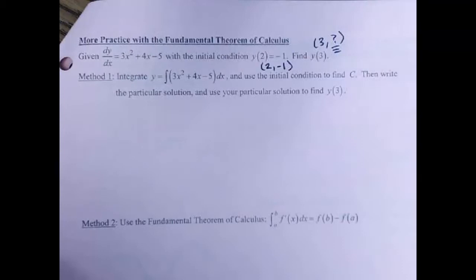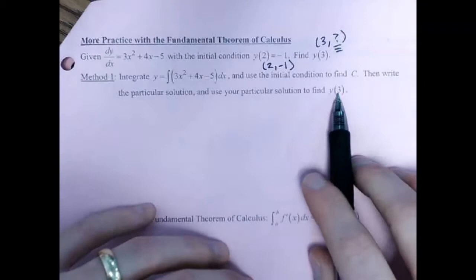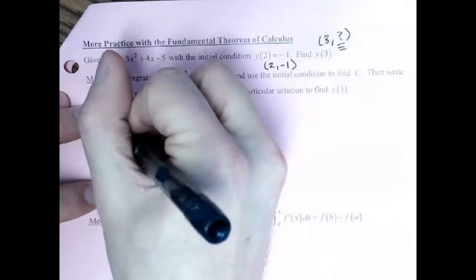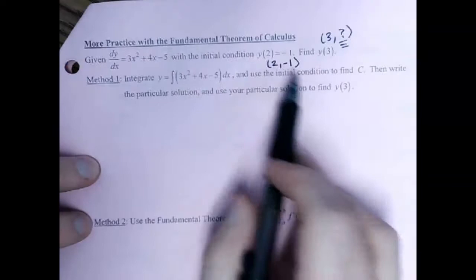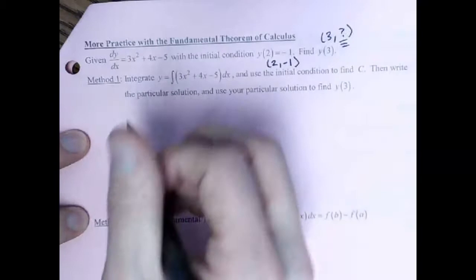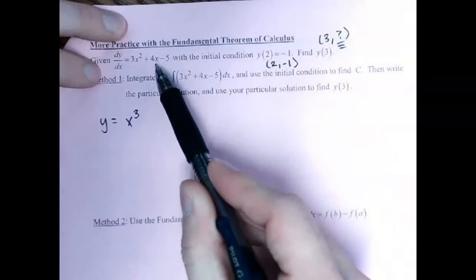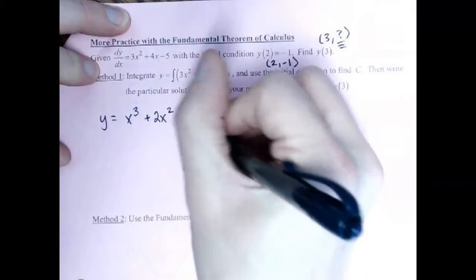We can do this two different ways. Method one: do an indefinite integral to get back to the original function, use the initial condition to solve for C, and once you have the particular solution, just plug in 3. It's more straightforward but requires you to do all the calculus — the indefinite integral and then solving for C. Let's go through it. Integrating 3x² gives x³.